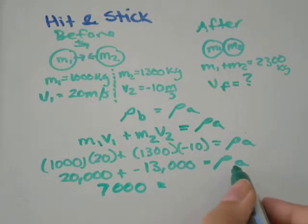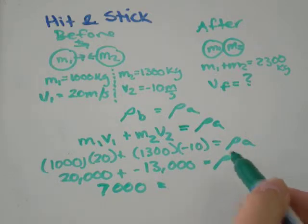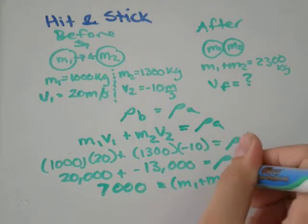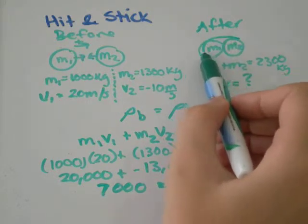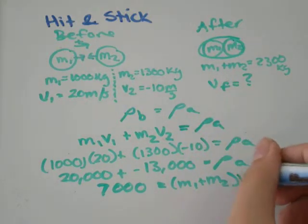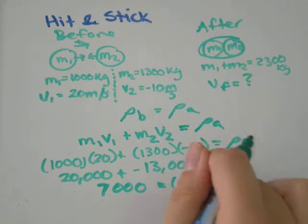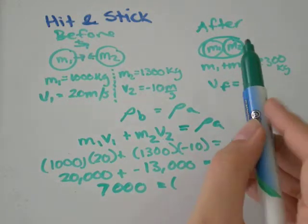20,000 plus negative 13,000 is going to be 7000. And the momentum after, momentum is mass times velocity, it's going to be M1 plus M2 equals the mass of the whole thing, and then times the final velocity. M1 plus M2 we said was 2300 kilograms.